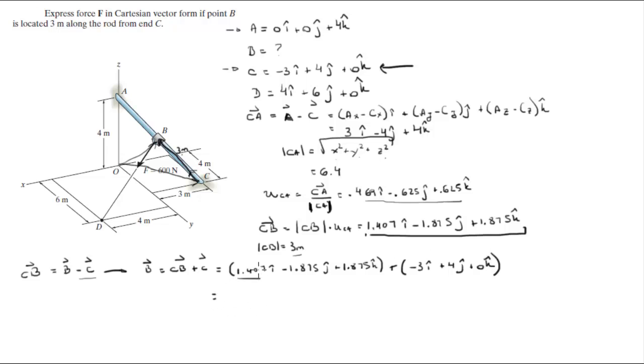So you add the i with the i, the j with the j, and the k with the k. And once you add them together you're gonna get that this is equal to negative 1.593i plus 2.125j plus 1.875k. This is position vector B.